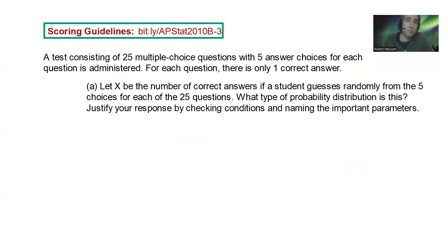Alright. Question 2010 B, number three. A test consisting of 25 multiple choice questions with five answer choices for each question is administered. For each question, there is only one correct answer. Let X be the number of correct answers if the student guesses randomly from the five choices for each of the 25 questions. What type of probability distribution is this? Justify a response by checking conditions and naming the important parameters.